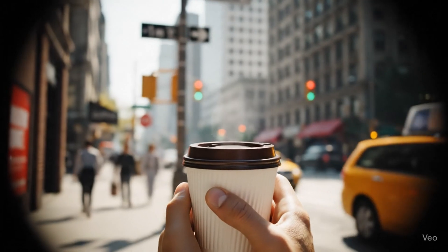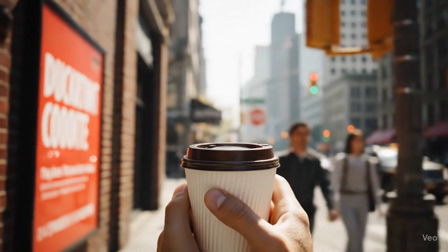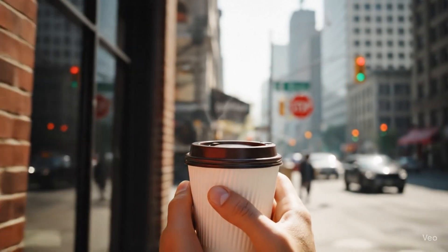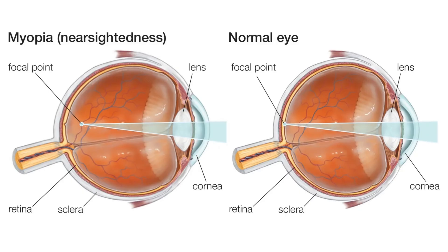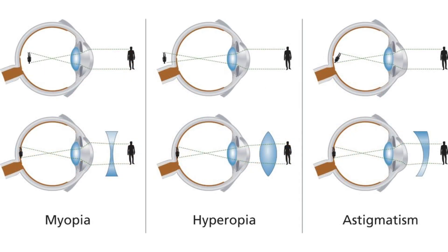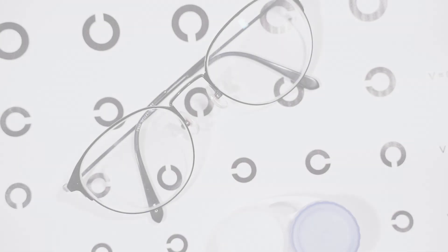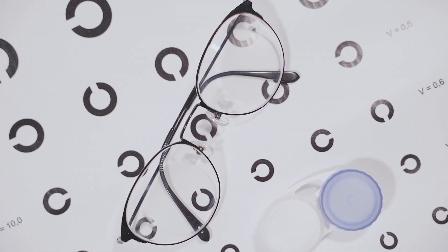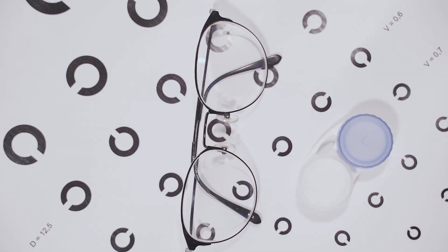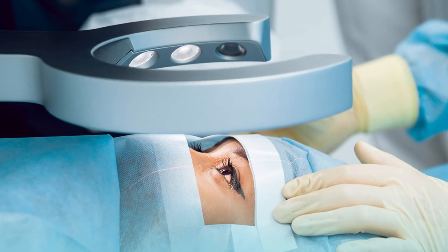If you are nearsighted, you cannot see distant objects clearly because the light rays reflected from them focus before reaching the retina. This occurs if the eyeball is too long or if the angle of refraction of light rays in the lens is too great. Concave lenses correct nearsightedness by straightening the light rays so that they focus precisely on the retina. If you are farsighted, close objects appear unclear and blurry — when the eyeball is too short or the lens refracts light weakly, the rays from a nearby object do not have time to focus on the retina. Nearsightedness and farsightedness are easily corrected by wearing glasses or contact lenses, and modern surgical methods also allow for effective correction.